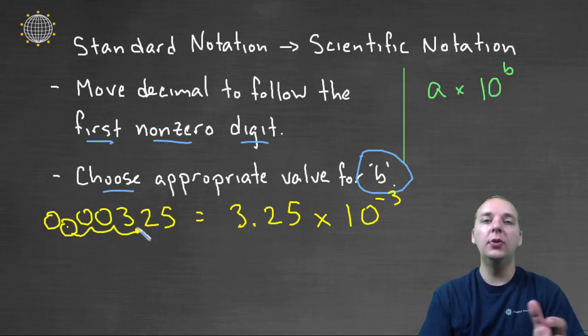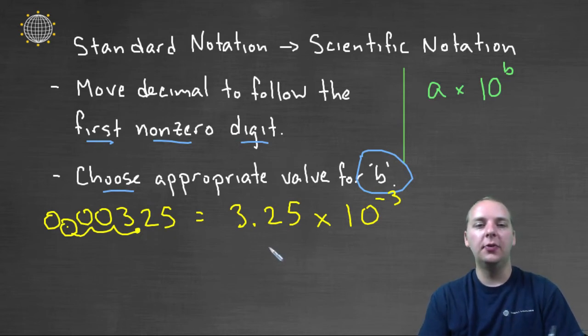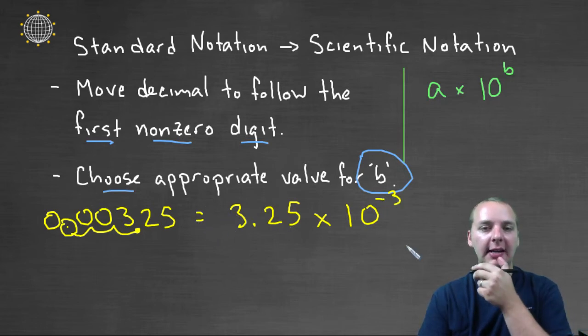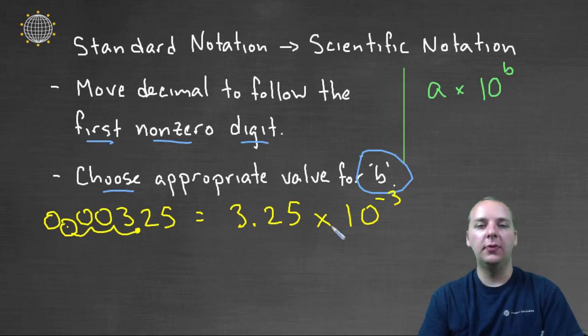Or negative three places, or three places, three places to the left, since it's negative of course. We're trying to make this number smaller, so it goes 1, 2, 3 places to the left, and we designate that with a negative exponent for the 10.